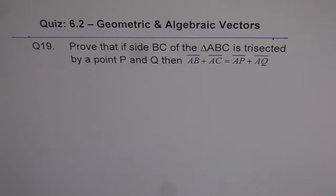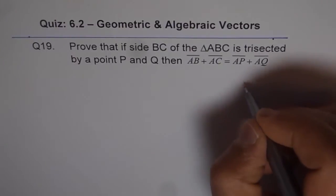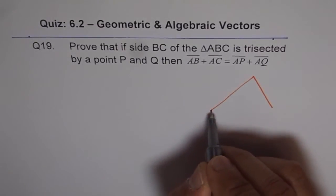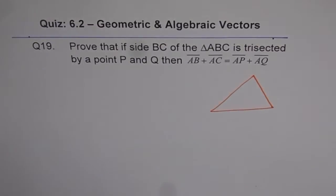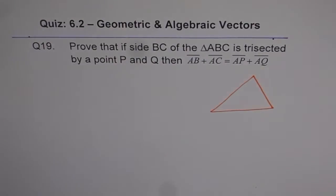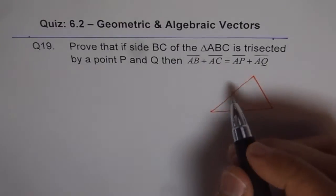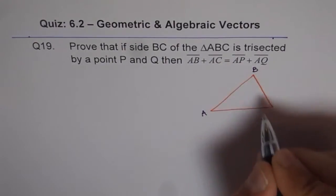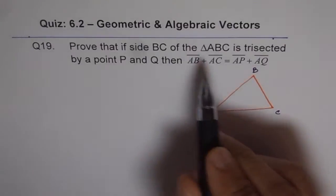So what we can do is let's make a triangle here. This is a triangle and we are saying prove that if side BC is trisected. So the triangle is, let's say, ABC and BC is trisected.